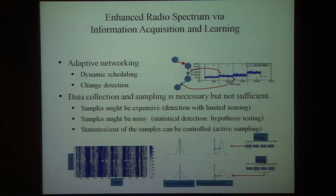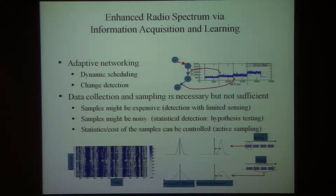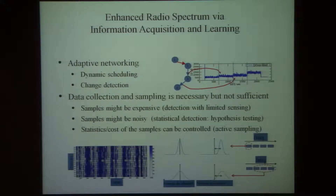As an example: if you're sensing the spectrum, you may choose to decide whether you want to sense a collection of bands together or do fine sensing at a single band level. If you sample a single band, maybe you have higher accuracy, but if you sample a broader band, you have less information per band.